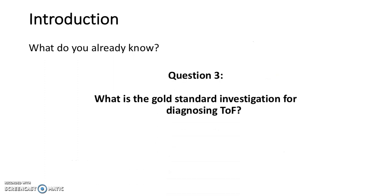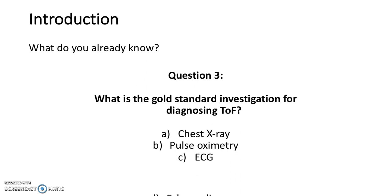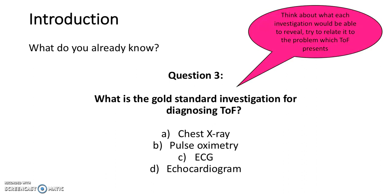Question 3: What is the gold standard investigation for diagnosing tetralogy of Fallot? Is it A, chest x-ray; B, pulse oximetry; C, ECG; or D, echocardiogram? Think about what each investigation would be able to reveal and try to relate it to the problem which tetralogy of Fallot presents. The answer is D, echocardiogram.